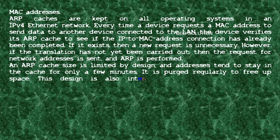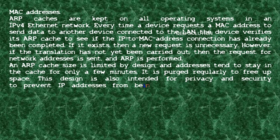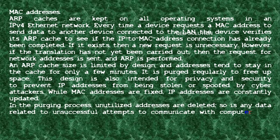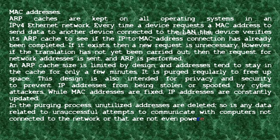An ARP cache size is limited by design and addresses stay in the cache for only a few minutes. It is purged regularly to free up space. This design is also intended for privacy and security to prevent IP addresses from being stolen or spoofed by cyber attackers. While MAC addresses are fixed, IP addresses are constantly updated. In the purging process, unutilized addresses are deleted, as is any data related to unsuccessful attempts to communicate with computers not connected to the network or not powered on.